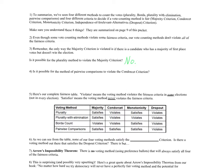Is it possible for the method of pairwise comparisons to violate the Condorcet criterion? In pairwise comparisons, you match everybody up — A vs. B, A vs. C, etc. If there is a candidate who wins all of their matchups, they will most definitely win more matchups than anyone else, so again no violation is possible.